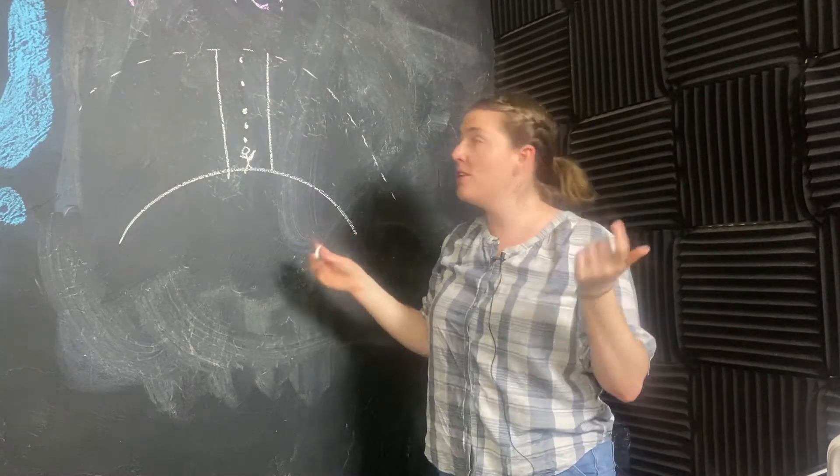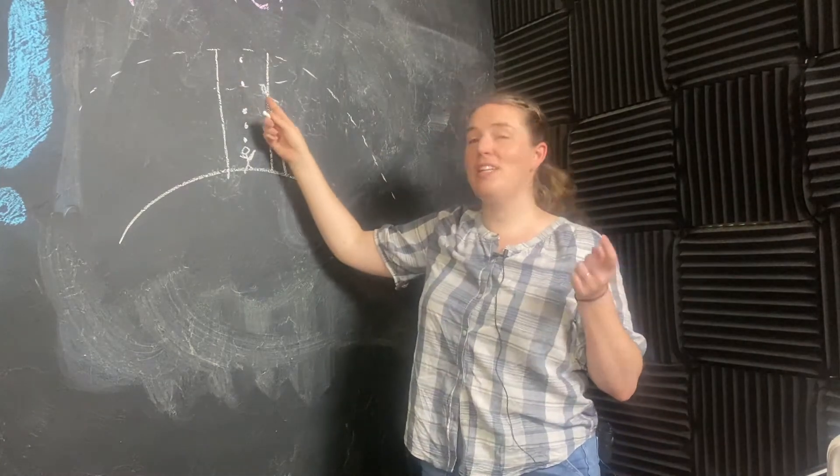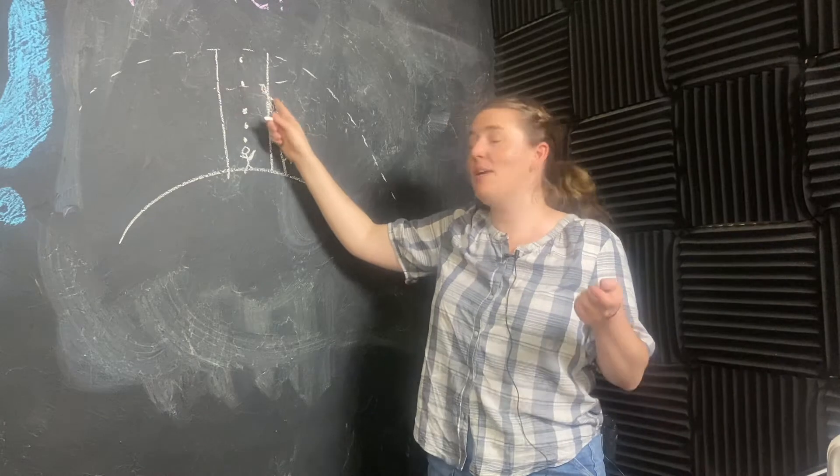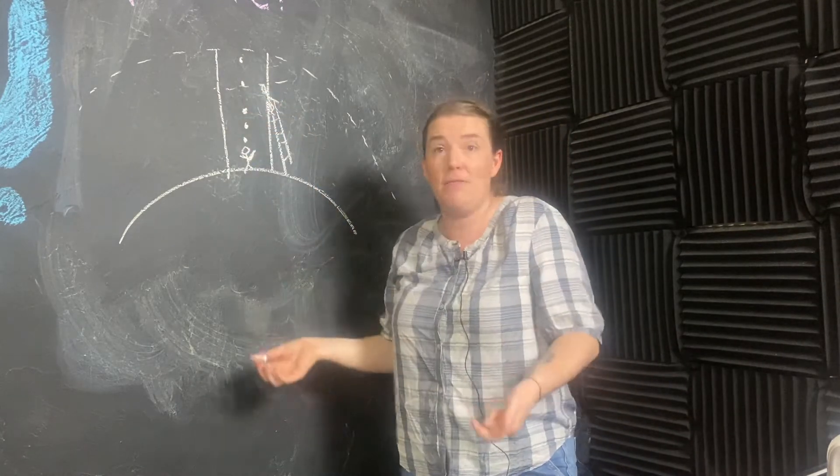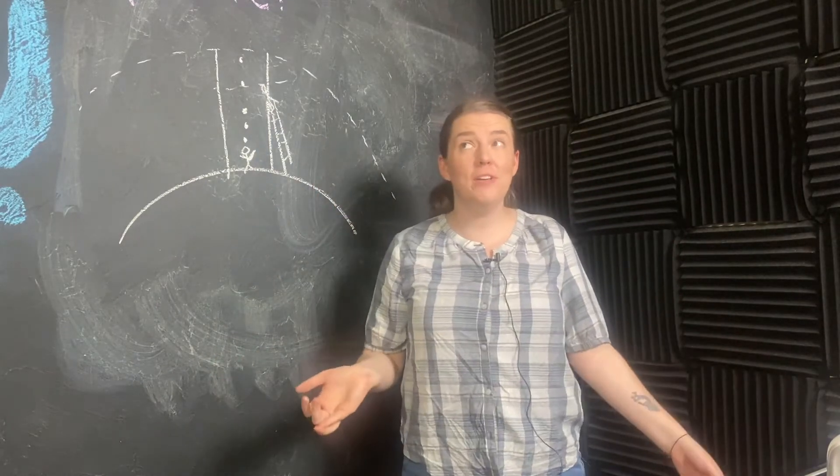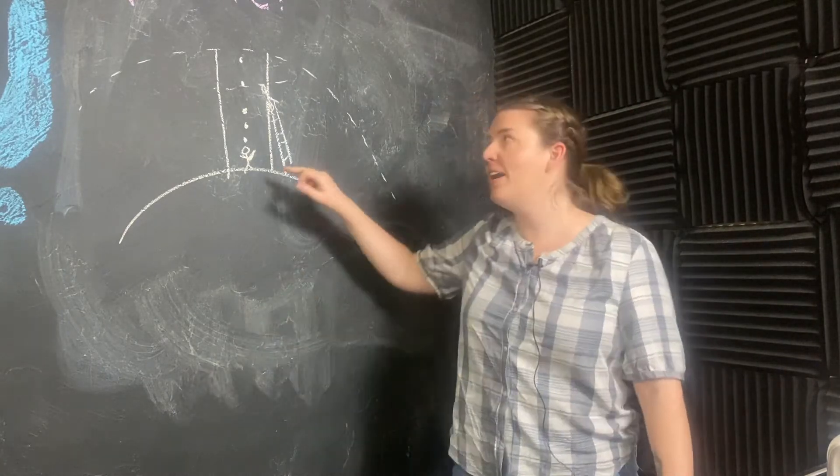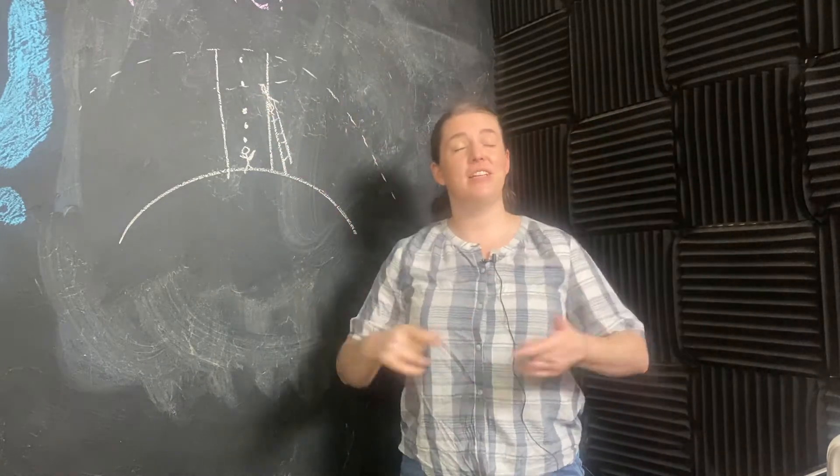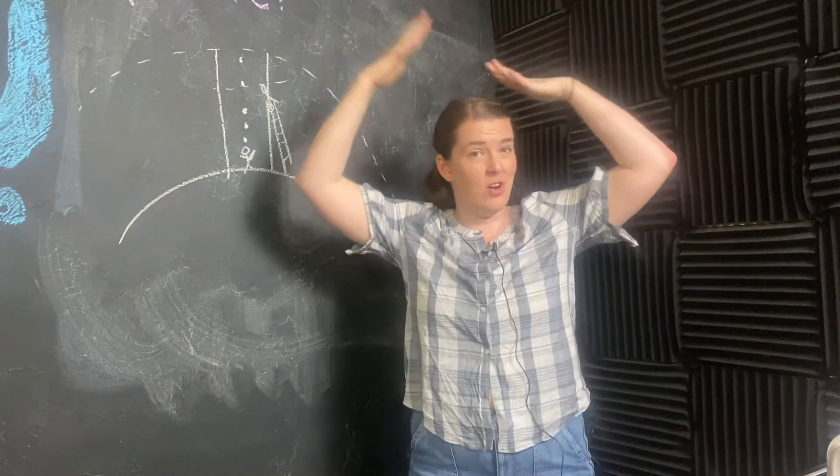But if Timmy were to get up and climb a ladder, then when he's higher up, the pressure on Timmy here would only be two. There's less air above him, so the pressure has gone down. This silly little picture gives us a pretty intuitive understanding of why pressure decreases with height. The higher up you go, the less air there is above you, the less weight there is pushing down on your head.